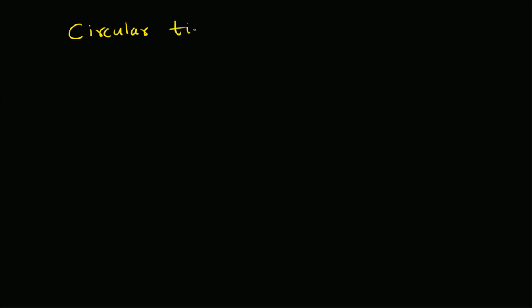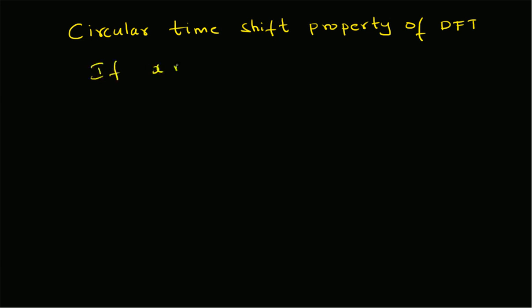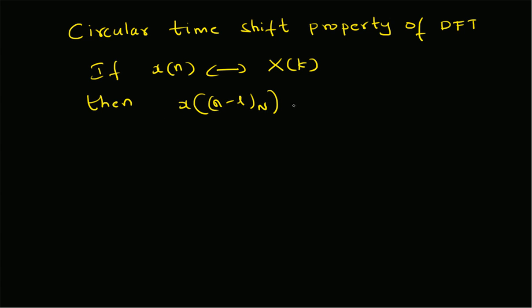Hello, welcome. In this short video let us look at the circular time shifting property of DFT. The theorem can be stated as follows: if x of n has a DFT capital X of k, then x of n minus l mod N, that is a circular shifted sequence, will have a DFT given by X of k multiplied by e power minus j 2 pi k times l by N. That is the extra phase term.